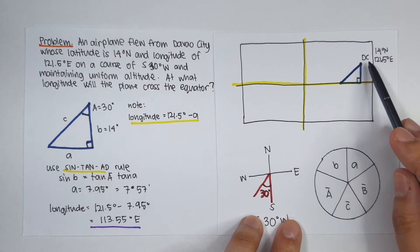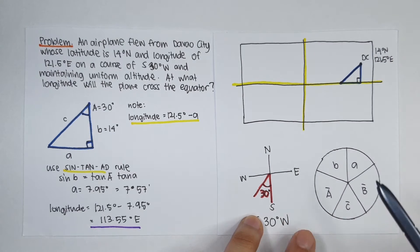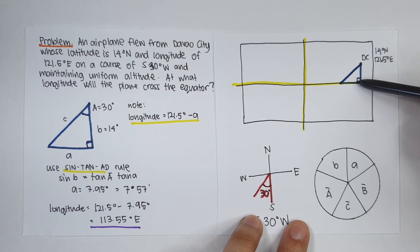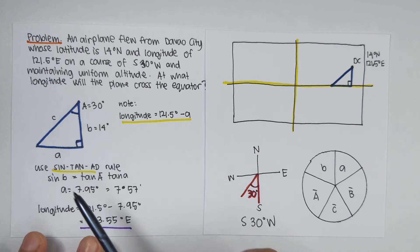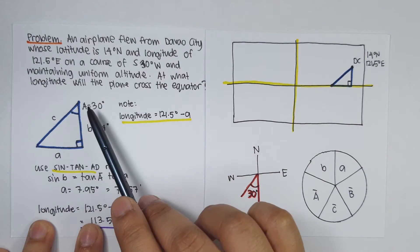So I have formed a right spherical triangle. So this is 30 degrees, this is 14 degrees, and this is 90 degrees. Let this be side C, side B, and angle A.